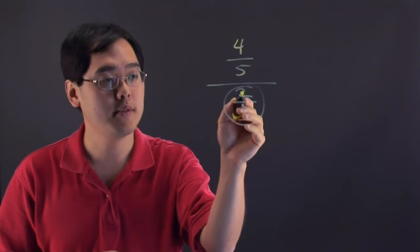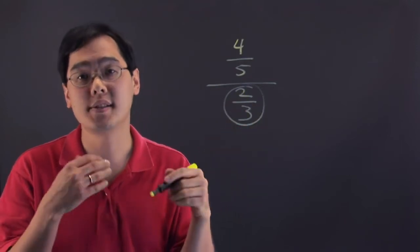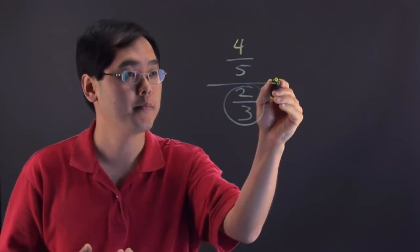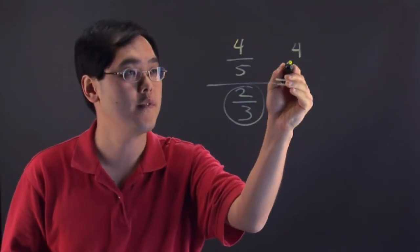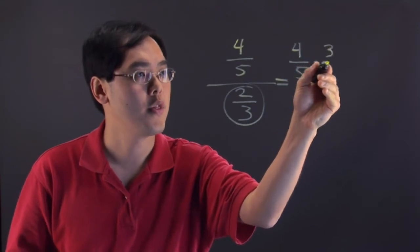So if you think about 2 thirds, the reciprocal of 2 thirds is 3 halves. So instead of dividing by 2 thirds, you're going to take 4 fifths and multiply it by 3 halves.